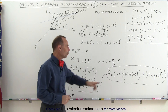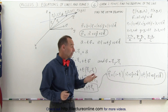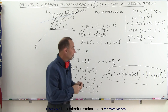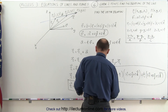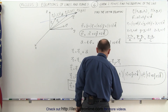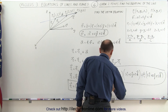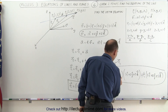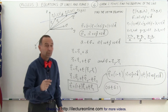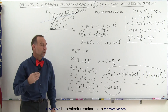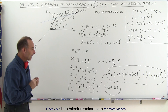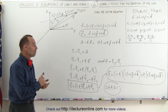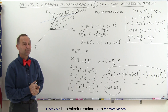Since we have (1 minus t) in the equation, it is better to keep the parameter between 0 and 1. It is advised that 0 ≤ t ≤ 1, so that the value (1 minus t) will always be between 0 and 1. And that's how we define a line with a vector equation.